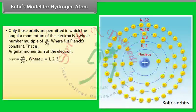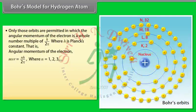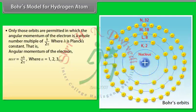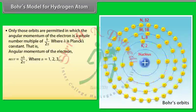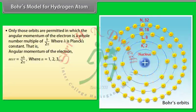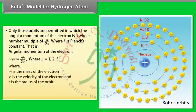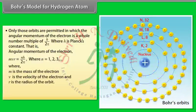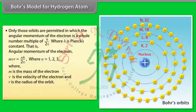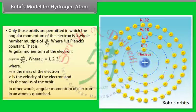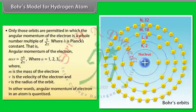That is, angular momentum of the electron: mvr = nh/2π, where n = 1, 2, 3, etc., m is the mass of the electron, v is the velocity of the electron, and r is the radius of the orbit. In other words, angular momentum of an electron in an atom is quantized.